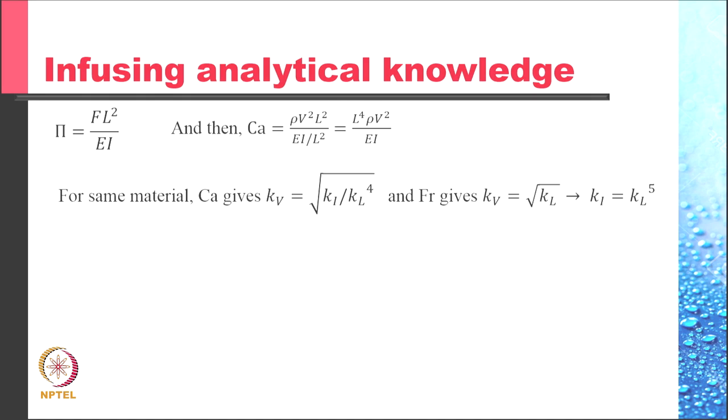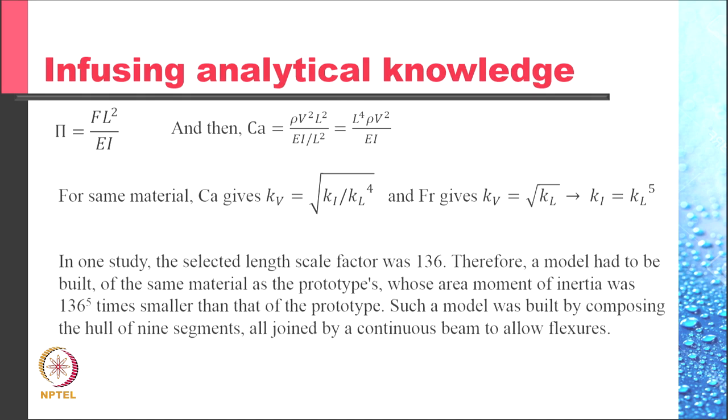If we use the same material, that is if we use ρ and E as the same, kρ and kE to be 1, then kV becomes equal to √(kI divided by kL raised to power 4). And the Froude number, which requires that kV be like √(kL), results in kI being like kL raised to power 5. In one study, the selected length scale factor was 136.